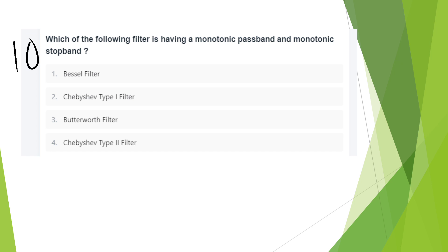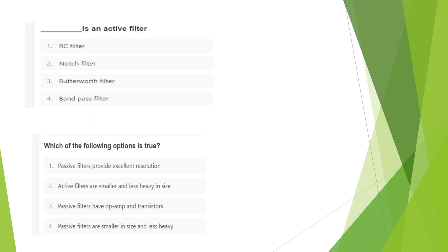Which of the following filters has a monotonic pass band and a monotonic stop band? It is the Butterworth filter. The Butterworth filter is an active filter.